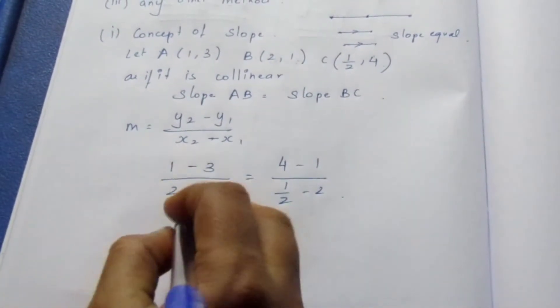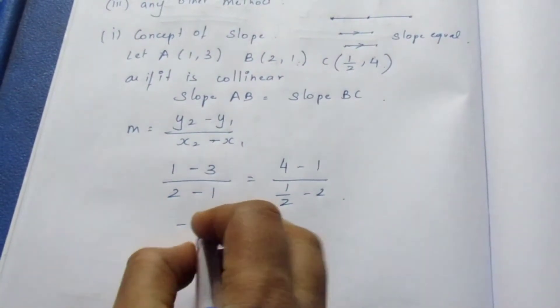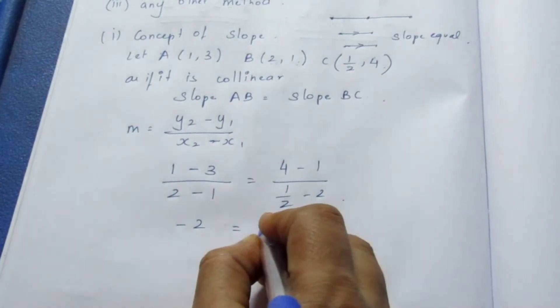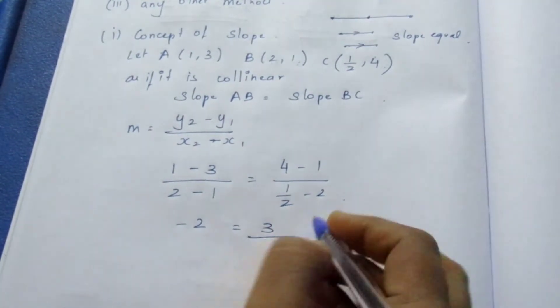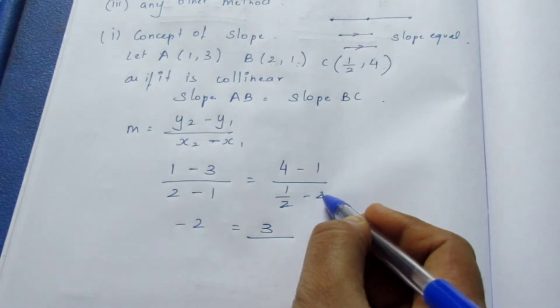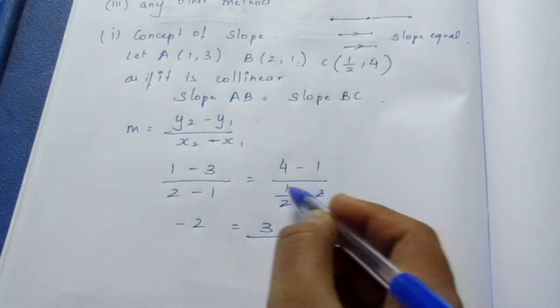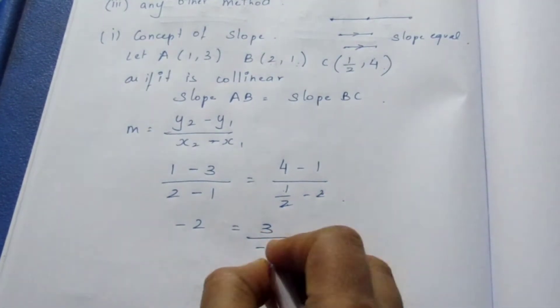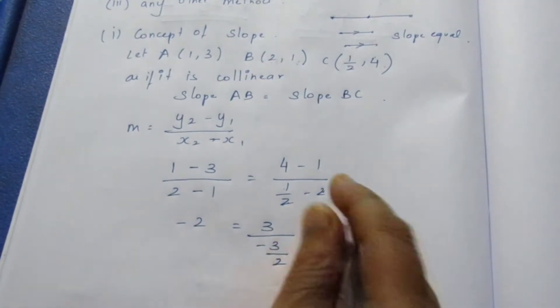Now we solve. The left side gives −2 / 1. On the right side, the denominator requires LCM: (4 − 1) = 3, and (1/2 − 2) = −3/2. So the right side becomes 3 / (−3/2) = −2.